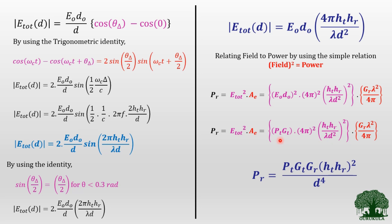By simplifying and cancelling all factors, the final received power equation becomes: P_r = P_T·G_T·G_R·(h_T·h_R)² / D⁴. This is the final received power at the receiver side for the two-ray propagation model. Notably, the denominator factor is D⁴, meaning received power degrades at a D⁴ rate — unlike the free-space propagation model where the denominator is D², indicating degradation at the square of distance.